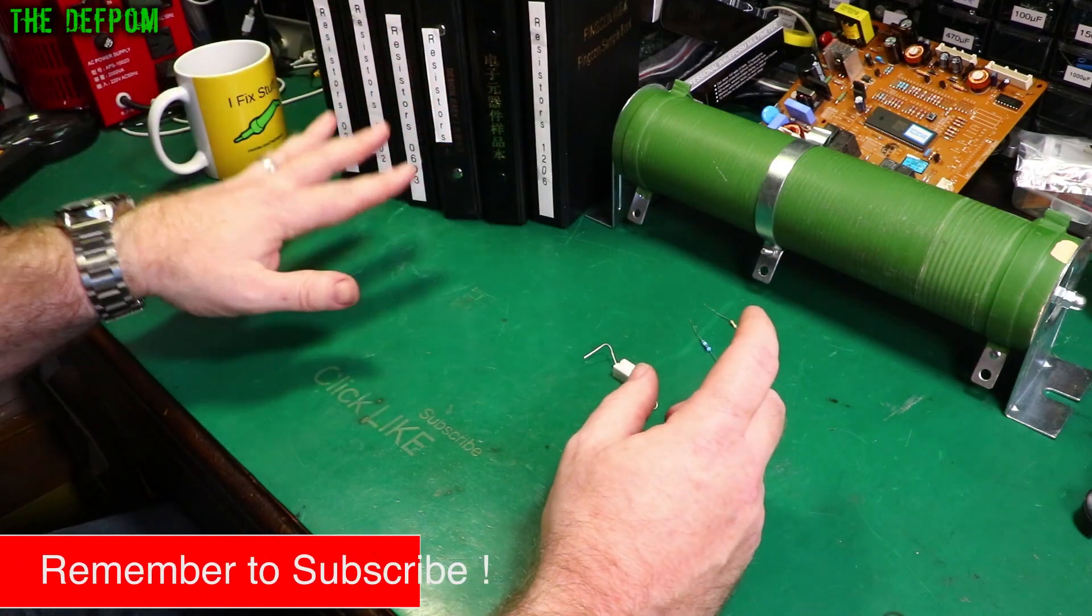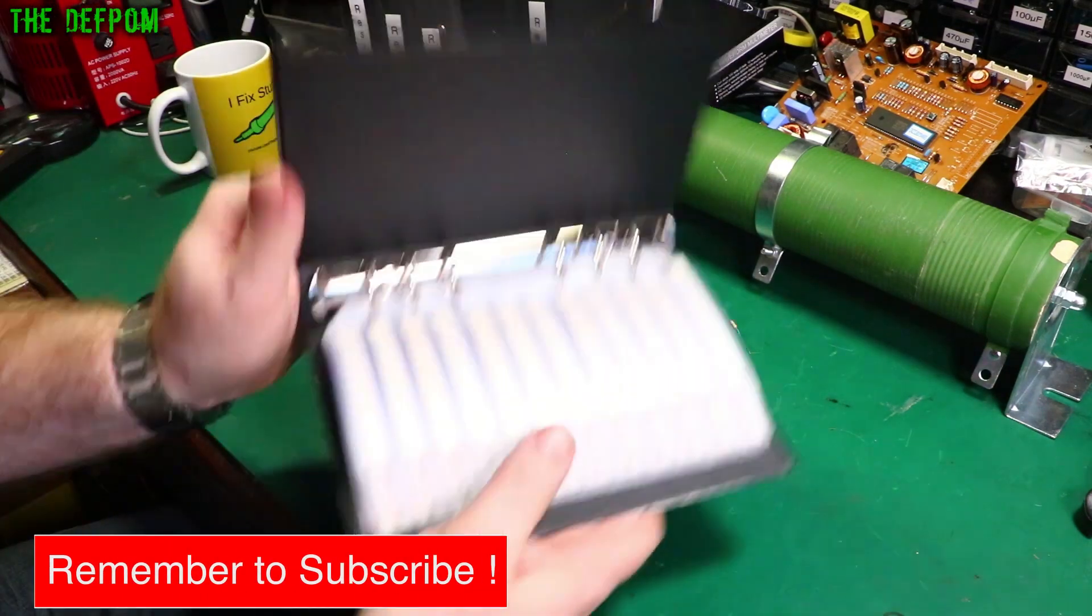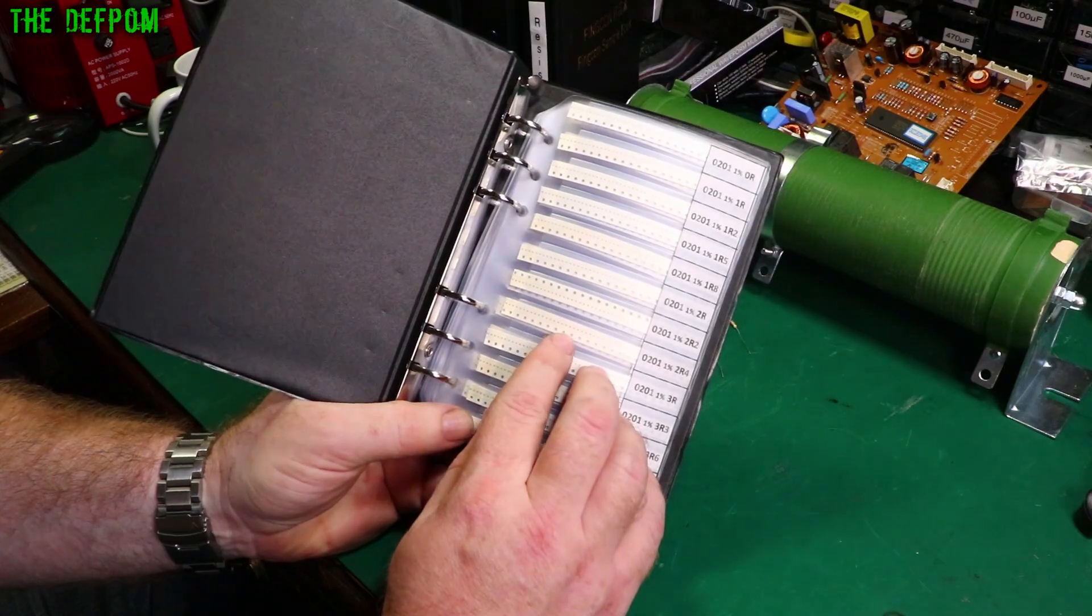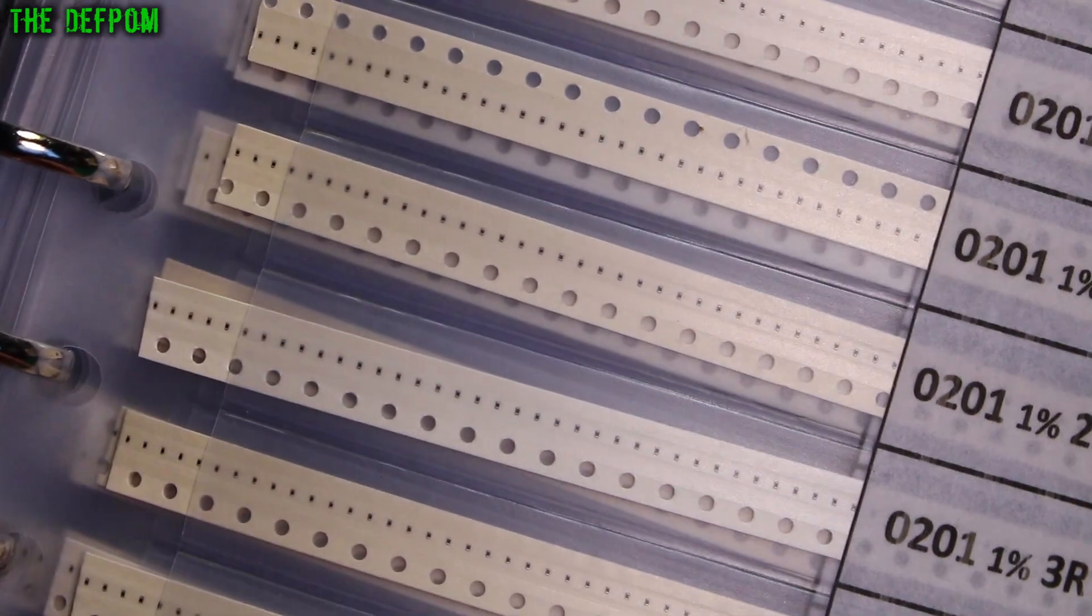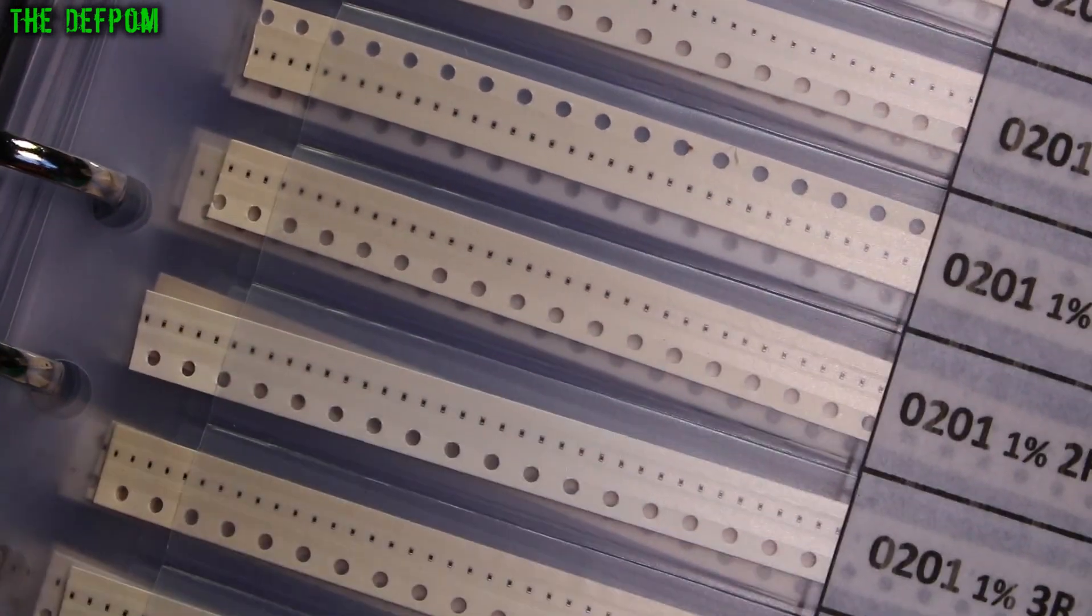We've also got surface mount parts which we've got in these books here. This is the smallest ones I've got. These are 0201s. Get really close there. Here's my fingernail and there's the resistor. 0201s. And they also come smaller than this.